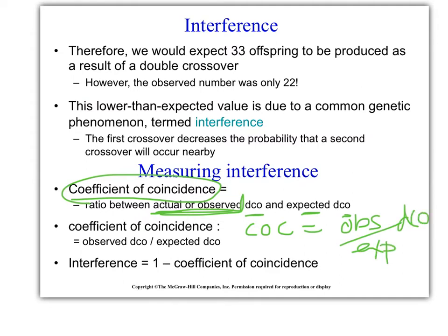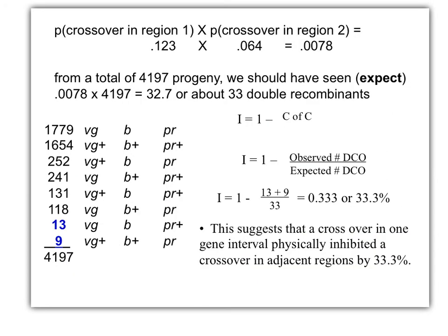Interference is calculated by 1 minus the COC. Interference being capital I. When we do this calculation, we take interference equals 1 minus the coefficient of coincidence. The observed over the expected, 1 minus that. Do the math: 0.333, or if we want to present it as a percent, 33.3%. So what does this tell you?